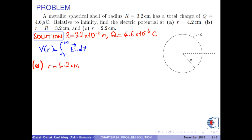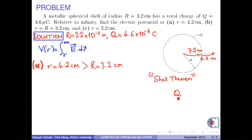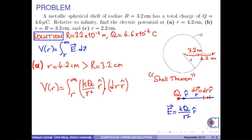In part A, r is 4.2 centimeters, which is greater than the radius of the shell, 3.2 centimeters. Therefore, this point is outside the sphere. According to the shell theorem, the charge on the sphere can be considered as if it were concentrated at the center. Therefore, the electric field at position r is calculated by the formula k times q over r squared, in the r-hat direction, where r-hat is the radially outward direction. The infinitesimal vector dr is expressed as dr times r-hat. Substituting these expressions into the formula for v(r), we obtain v(r) equals the integral from r to infinity of k times q over r squared, times r-hat dot dr times r-hat.